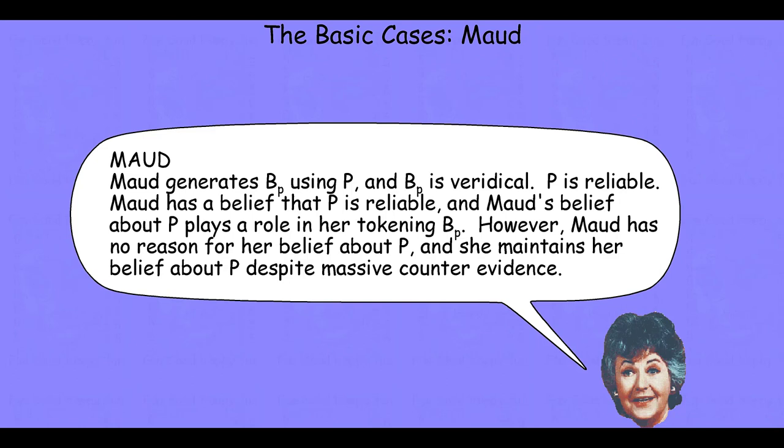In the next case we have Maude. Maude generates that same belief — the president is in New York City — using that same perfectly reliable clairvoyant power. Maude has a belief that her clairvoyant power is reliable, and that belief plays a role in her forming her belief about the president's whereabouts. However, Maude has no reason for her belief about that clairvoyant power, and in fact she maintains it despite massive cogent scientific evidence against its possibility. We'll end this module here and pick up in the next module by considering the final case — the case of Norman.